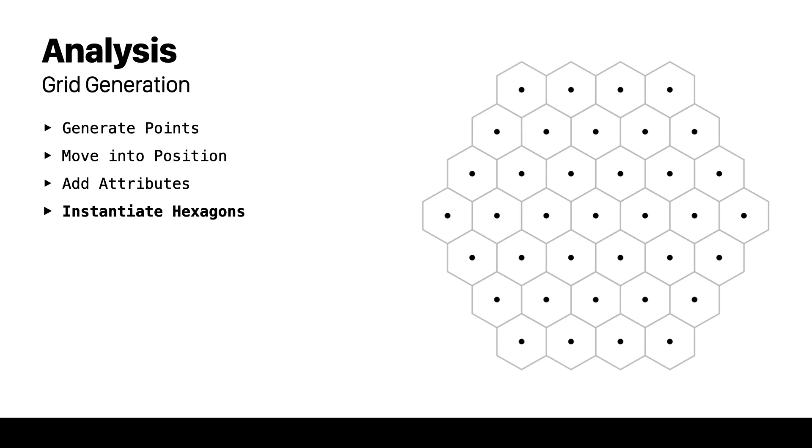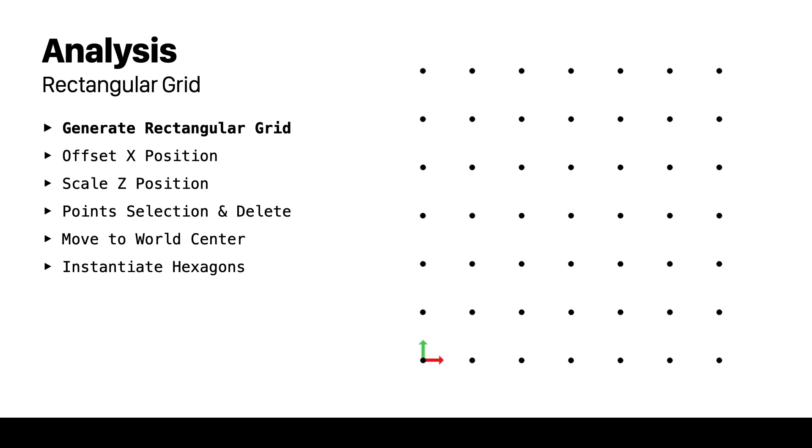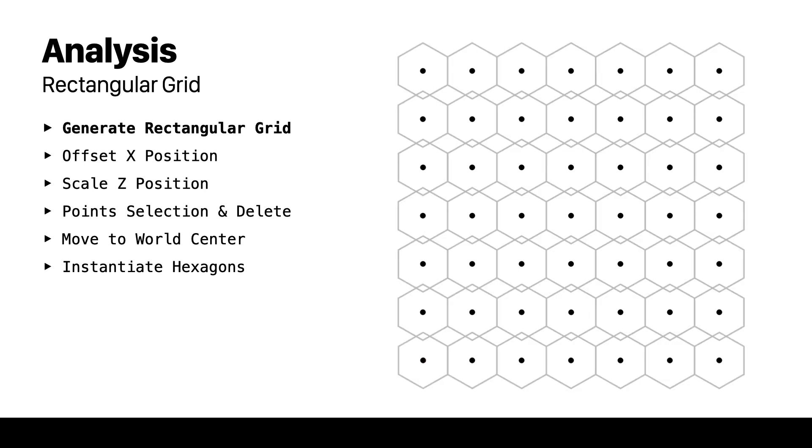When it comes to generating the grid I found there is a very popular way of doing it. That is by first generating a base rectangular grid layout where all the points have an equal x and z distance. You can easily do this inside of Houdini without vex by using the grid node. For visualization reasons and to get a better understanding of the distances I've also added hexagons to the points.